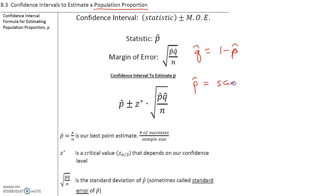To make sure we're clear, p-hat is the sample proportion, which is the number of successes divided by the sample size.